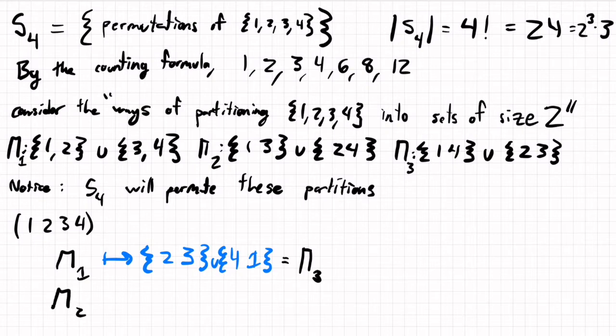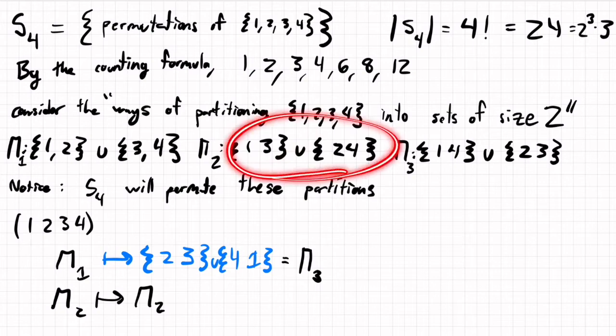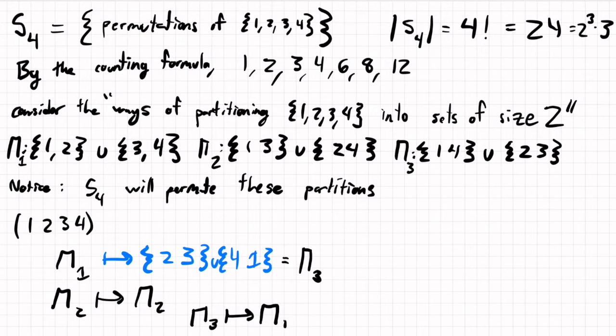We can do this for the other ones. π2 will be fixed. We can see that by seeing that 1 will go to 2, 3 will go to 4. So this set will be {2, 4}. So the two sets sort of swapped places, but we're not really keeping track of the order of the sets. So the two sets swapping places actually fixes this. And then π3 is going to go to π1.